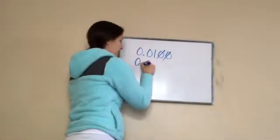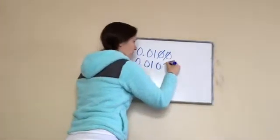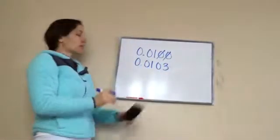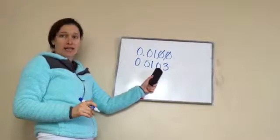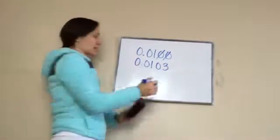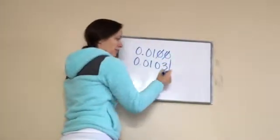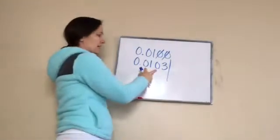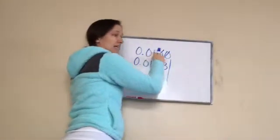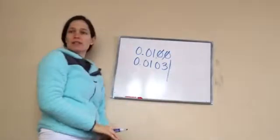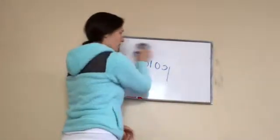Now, what if you had 0.0103? Does that zero matter? Yes, because it's holding a place because the end of the number ends here. So we needed these zeros. But if they're at the end and there just keeps being zeros, you can erase them. You don't even have to have them.